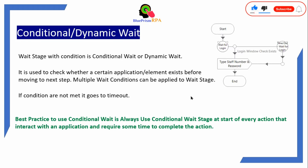For example, take the login button scenario. After putting the value in the staff number and password, once you click on login it will go to the next window. In that type of scenario we can use conditional wait, because after that another window will open. We have to always check that the window is opened or not. Similarly, after launching the application, you can also check that the login window exists or not. Let me show you practically how to apply throttle wait, static wait, and dynamic wait.